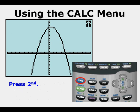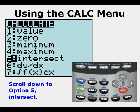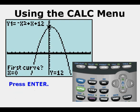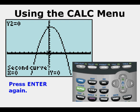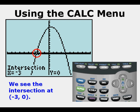Press second. Press trace to get to the calc menu. Scroll down to option five, intersect. Press enter. Press enter again. Press enter again. And after guess, press enter one last time. And we get an intersection at the point negative three comma zero.